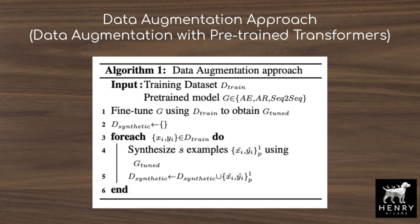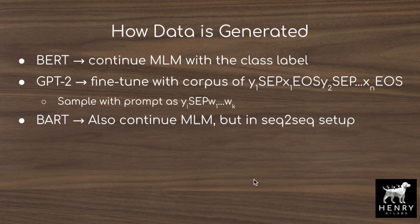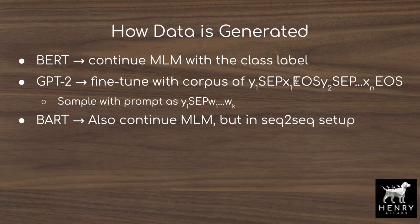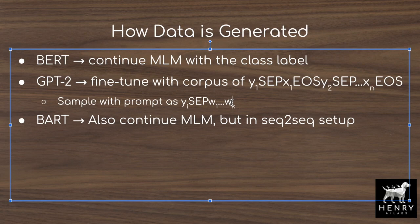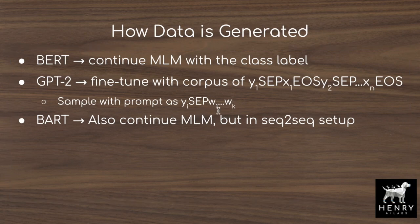For fine-tuning BERT, we continue masked language modeling with the class label prepended to the sequence — to make a fair comparison between BERT, GPT-2, and BART rather than using BERT's full embedding combination. For GPT-2, we take all labeled data and concatenate it as: class label, separator token, text data, end-of-sentence token, then the next example. When sampling from GPT-2, we use a prompt of class label, separator, and some initial tokens W_1 to W_k to condition the generation.